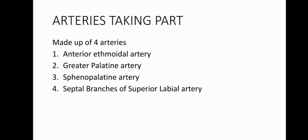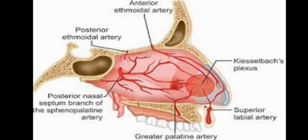What are the blood vessels which take part in forming this anastomosis over the nasal septum? They are the anterior ethmoidal artery, the sphenopalatine artery, the greater palatine artery, and the septal branches of the superior labial artery. This is a schematic diagram which shows the various arteries taking part in the formation of Kiesselbach's plexus and its location in relation to different bony landmarks in the head and neck area.